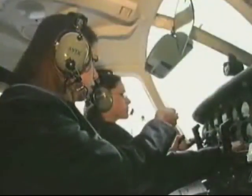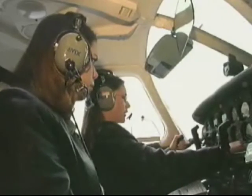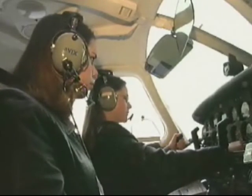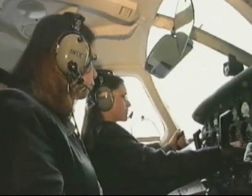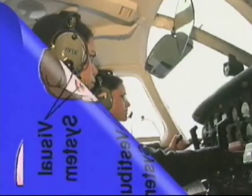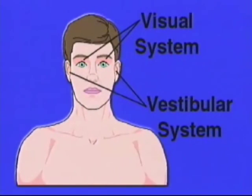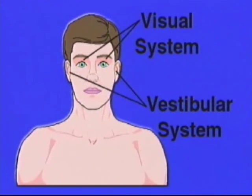Hearing does not create any significant role in illusions and plays only a minor role in spatial orientation. The visual and vestibular systems play a dominant role in spatial orientation and override the small inputs of the proprioceptive and auditory systems.